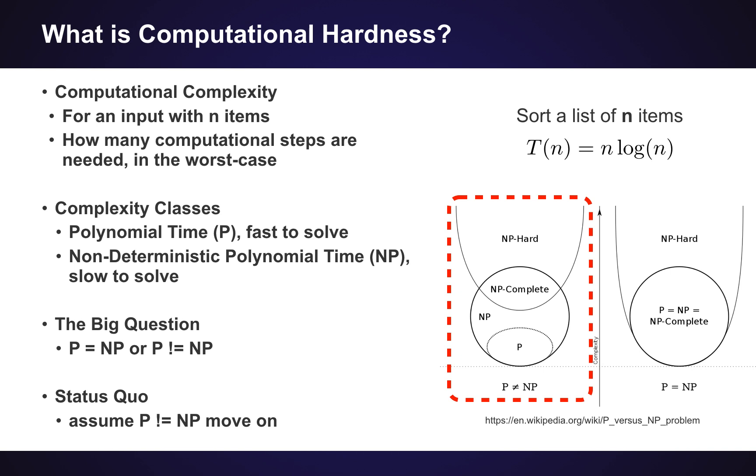So I would say the status quo among computer scientists is just to assume that the class of problems P is not equal to the class of NP problems, and we move on just kind of assuming this is the way computation works.